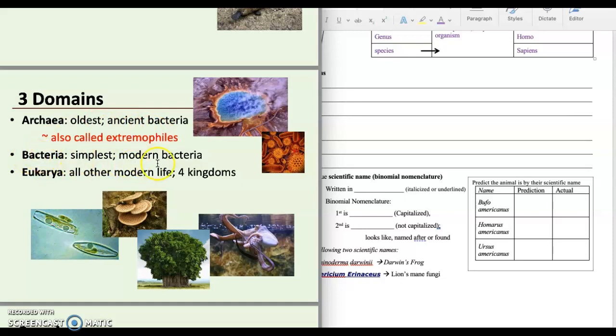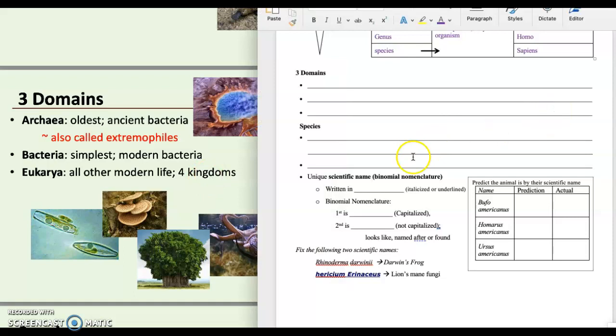Now, bacteria, these are very common. This is the simplest form of life on Earth. And this is our modern bacteria. You have a bunch in your stomach. When everyone talks about gut health, what they're talking about is what kind of bacteria do you have in your stomach and small intestine lining? You need some. You have some on your hands. It's everywhere. And then the third domain is eukarya. All other modern life. So that's almost everything.